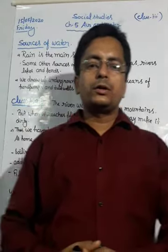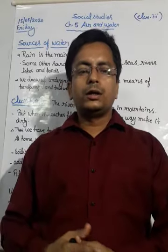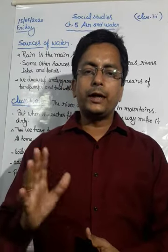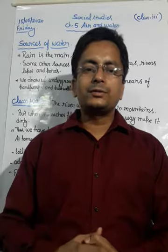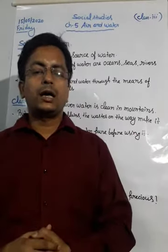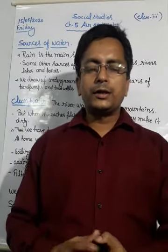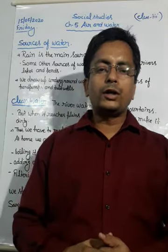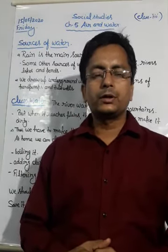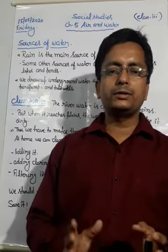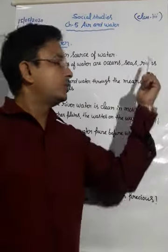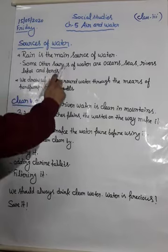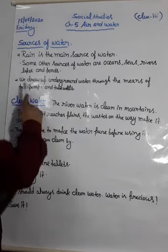There are different landforms on the earth. On mountains, there is always snow and ice. When this ice and snow start melting, they convert into water and form many rivers. So rivers, lakes, and ponds are also main sources of water.